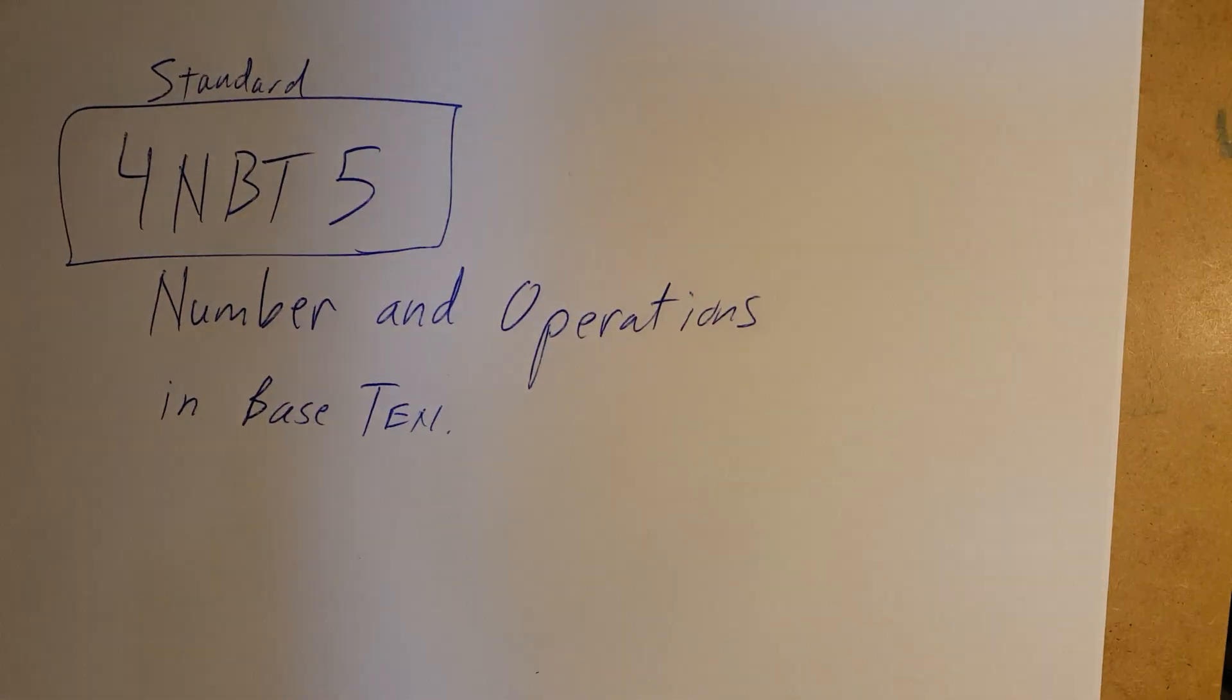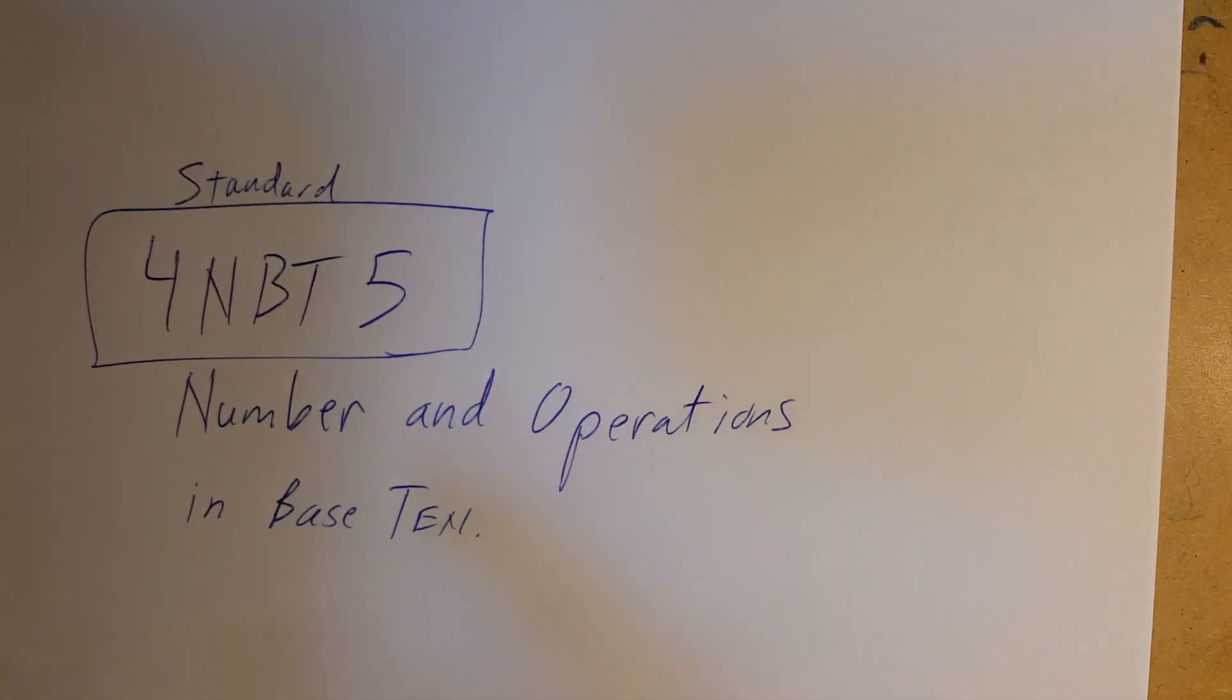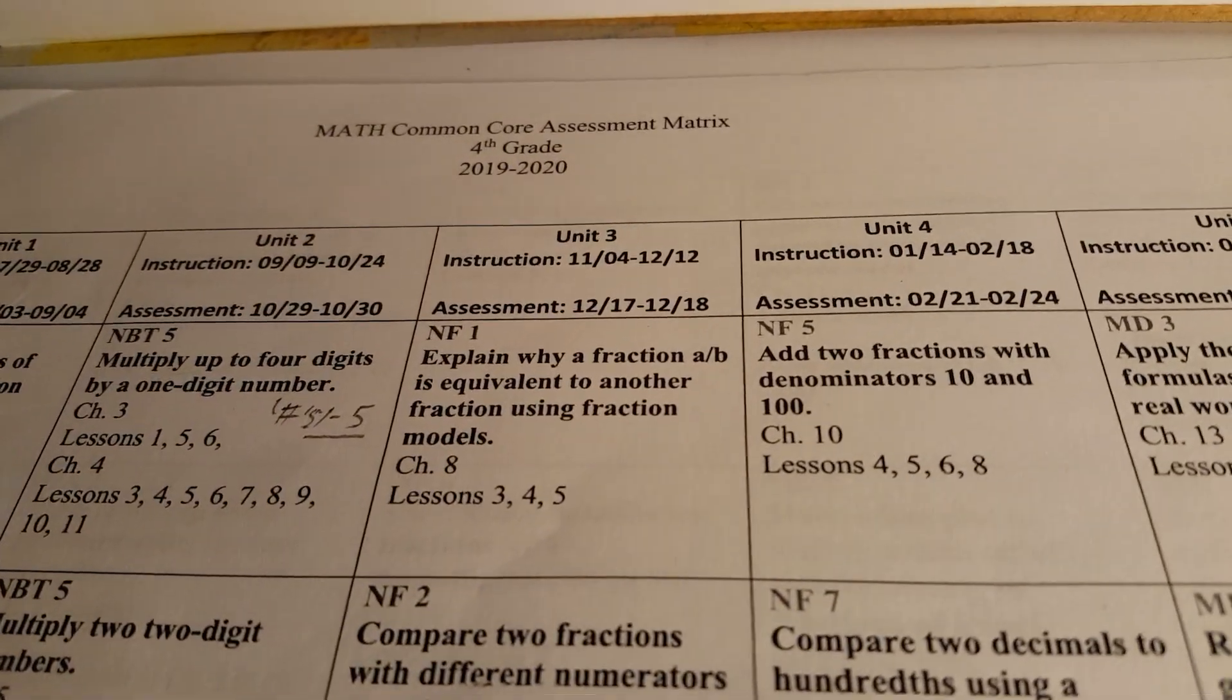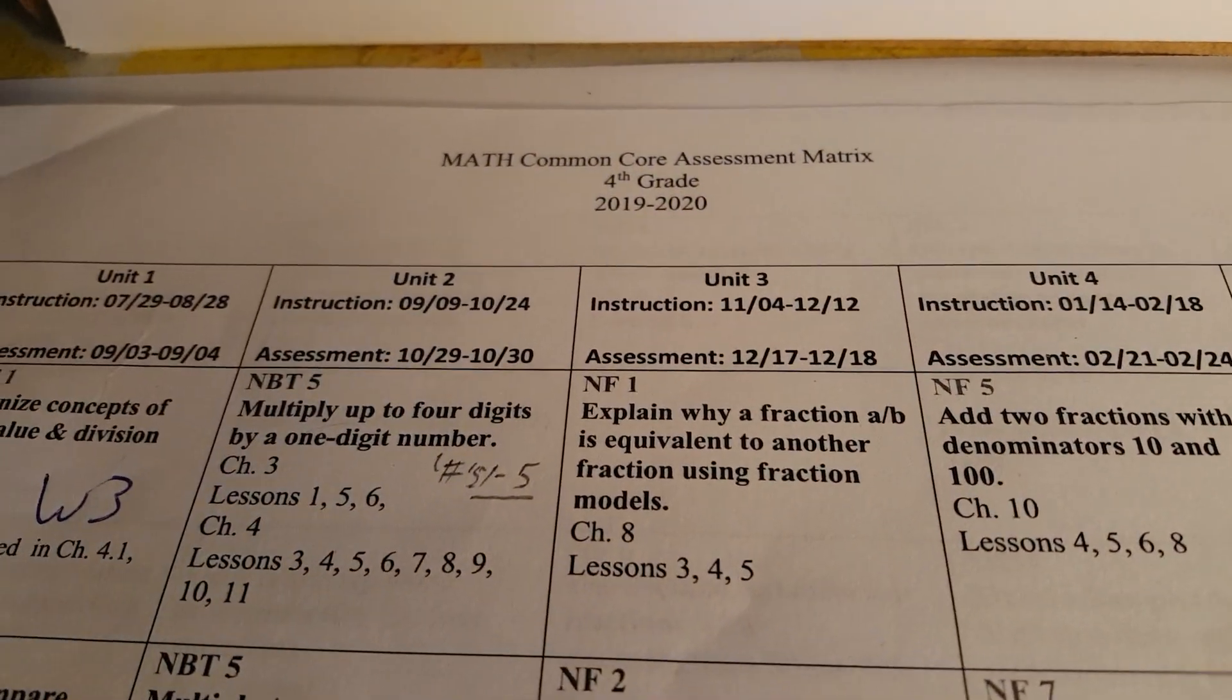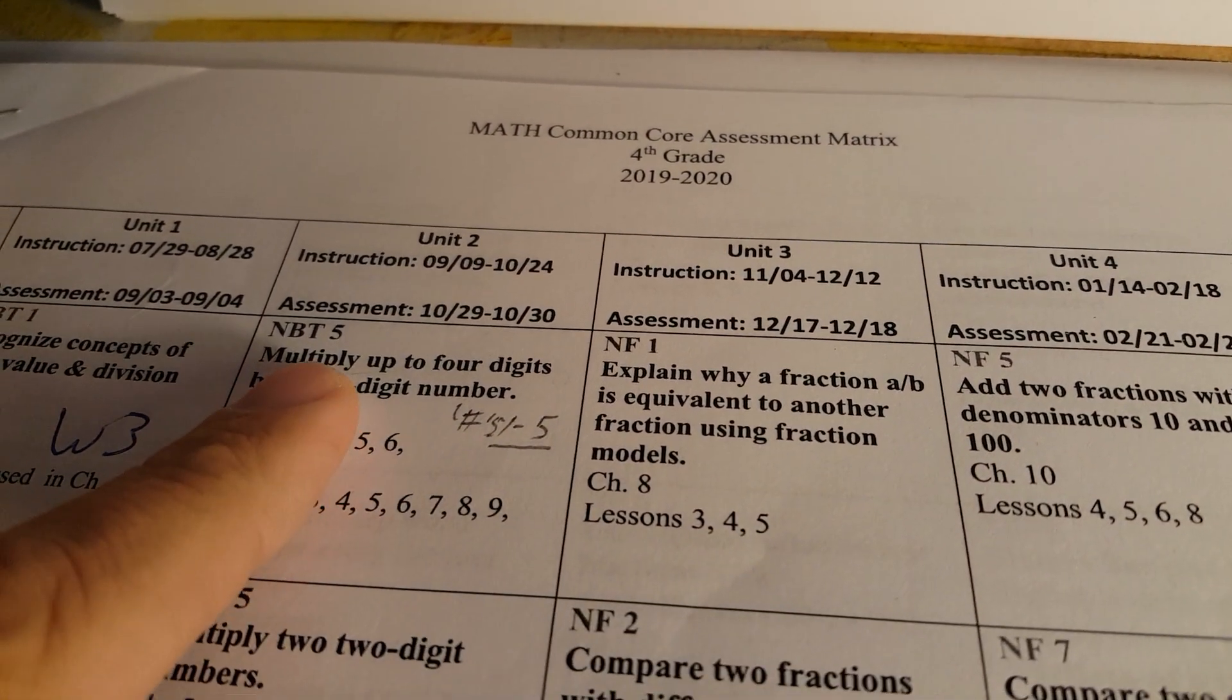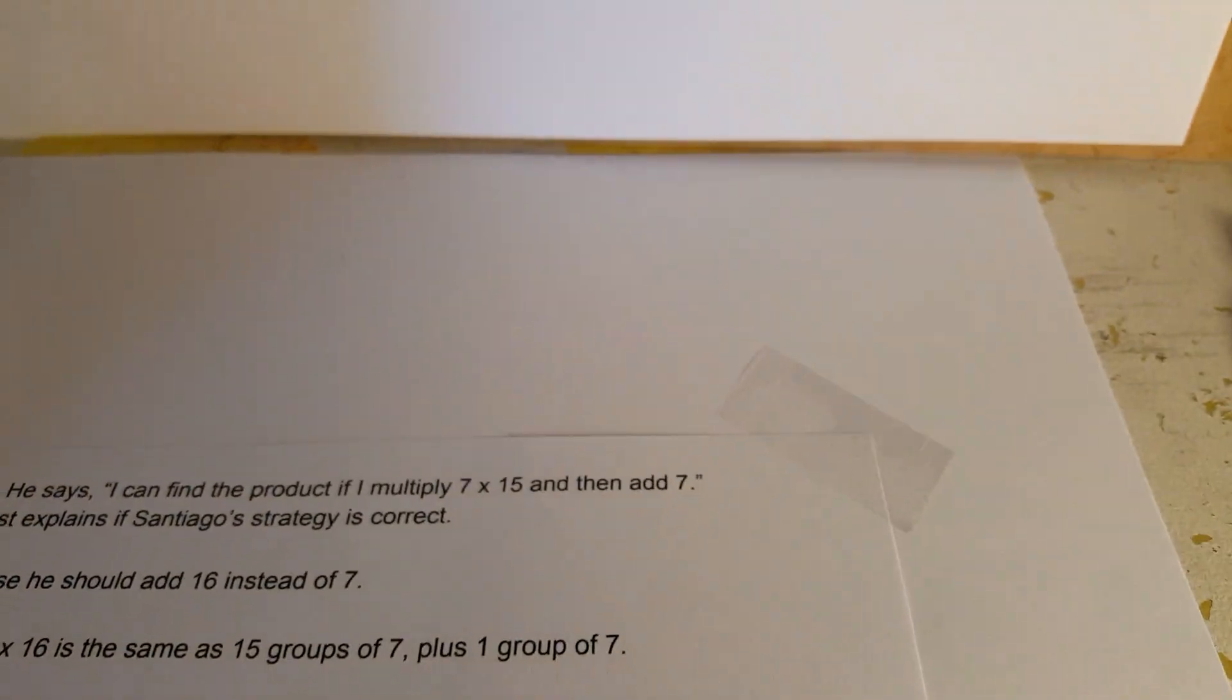Hello, this is Ryan Dickus going over standard 4.NBT.5, number in operations in base 10. We are preparing for the unit 2 assessment which is coming up. Of course when the year changes, this date's going to change, but standard 4.NBT.5 is multiply up to four digits by one digit number. We are moving on to number two.